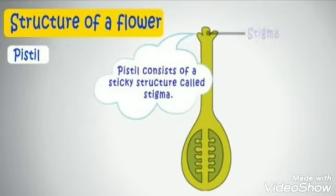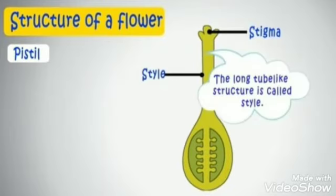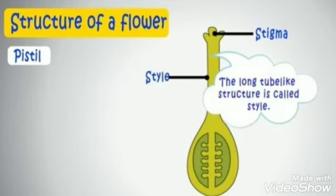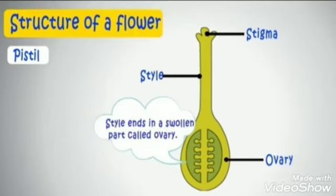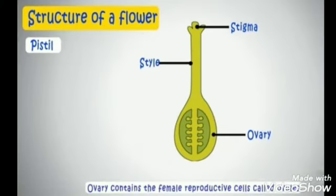The pistil consists of a sticky structure called the stigma, attached to a long tube-like structure called the style. The style ends in the swollen part called the ovary. This ovary contains the female reproductive cells called ovules. The pistil is also called the gynoecium.